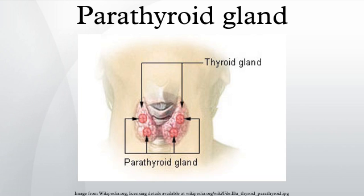Hypoparathyroidism: The state of decreased parathyroid activity is known as hypoparathyroidism. This is most commonly associated with damage to the glands or their blood supply during thyroid surgery, although it may also be associated with rarer genetic syndromes such as DiGeorge syndrome or an autosomal dominant syndrome. Hypoparathyroidism will also occur after surgical removal of the parathyroid glands.